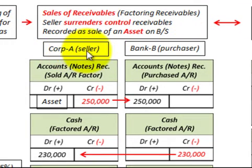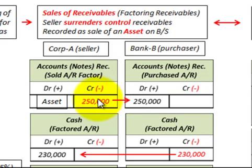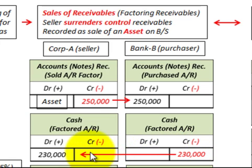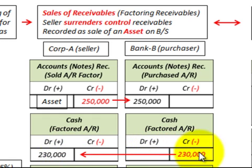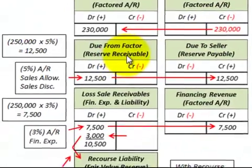Let's look at the sale of receivables, or factoring. We have Corporation A as the seller and Bank B as the purchaser. Corporation A sells $250,000 of accounts receivable to Bank B, removing it from their balance sheet. Bank B records the $250,000 increase in accounts receivable. However, Bank B pays a discounted amount of cash — in this case, only $230,000 — to Corporation A. So Corporation A increases cash by $230,000, and Bank B reduces cash by $230,000.